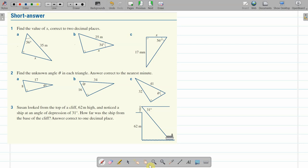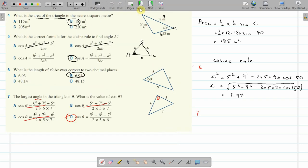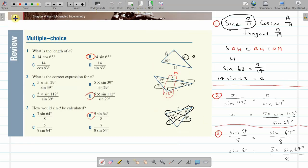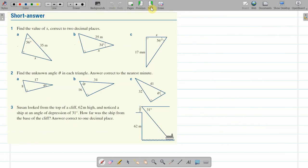All right, Year 12. Here we are. Revision video for Topic 4, the trigonometry of non-right-angled triangles. We're doing the chapter review questions from the start of page 190. And so now we're up to the short answer questions, questions 1, 2, and 3.